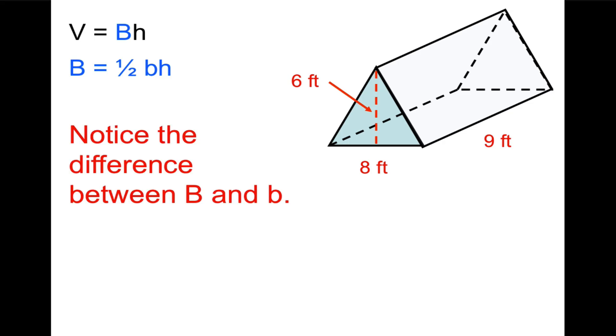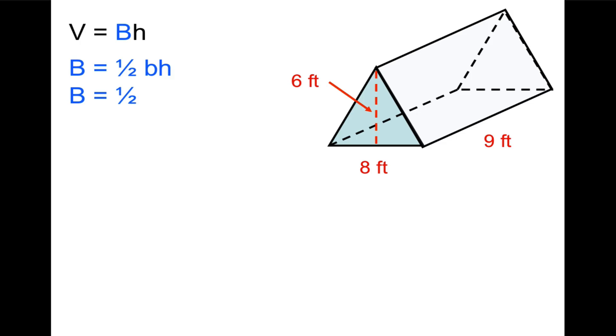Now you need to notice the difference between big B and little b. Big B is the area of that base. Little b here is the base of that triangle. What's the base of the triangle? 8. What's the height of the triangle? 6. So it's going to be 1/2 times 8 times 6. Half of 8 is 4, 4 times 6 is 24. So the area of the base is 24.